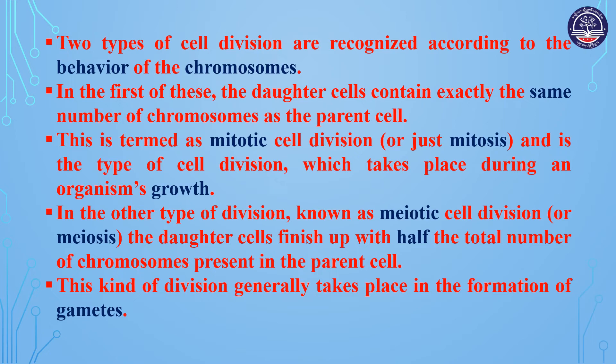In the other type of division, known as meiotic cell division or meiosis, the daughter cells finish up with half the total number of chromosomes present in the parent cell.